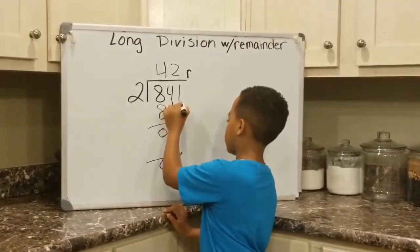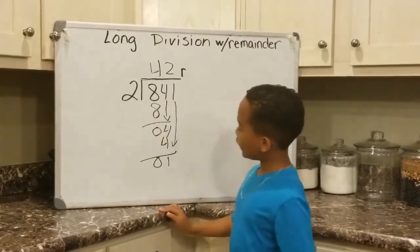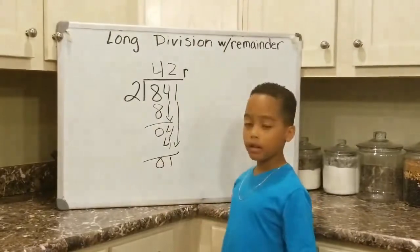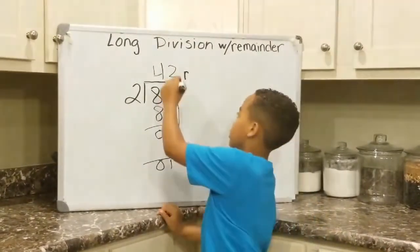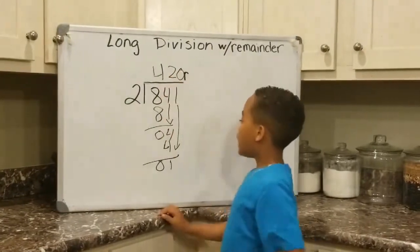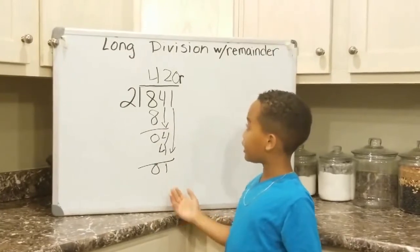Now, we're going to bring this 1 down. OK, can 2 go into 1? No. We're going to write a 0 up here. And that makes the remainder 1 because there's nothing else to bring down.